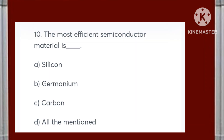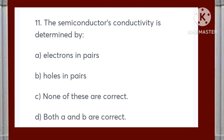The most efficient semiconductor material is: silicon, germanium, carbon, or all of the mentioned? Answer is D — all the mentioned. The semiconductor's conductivity is determined by: electrons in pairs, holes in pairs, none of these, or both A and B? Answer is D — both A and B.